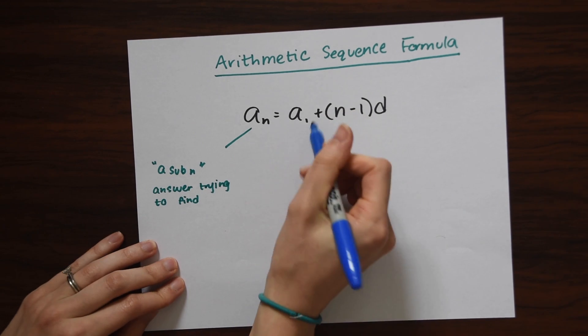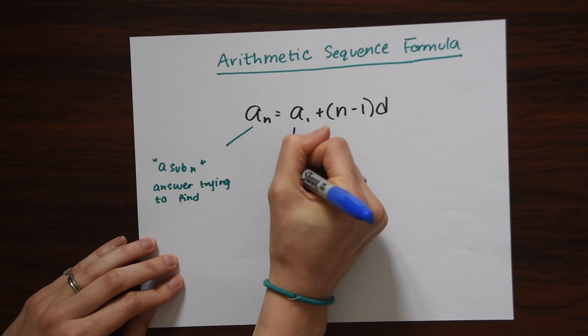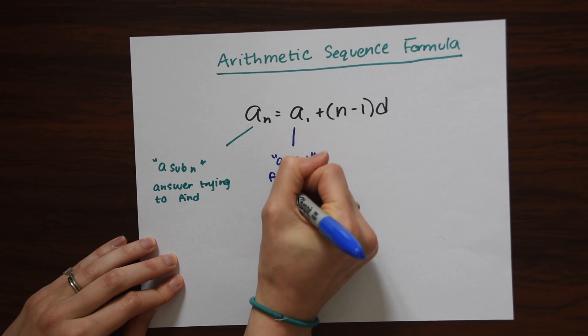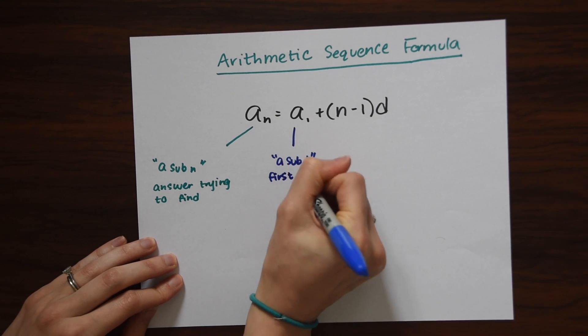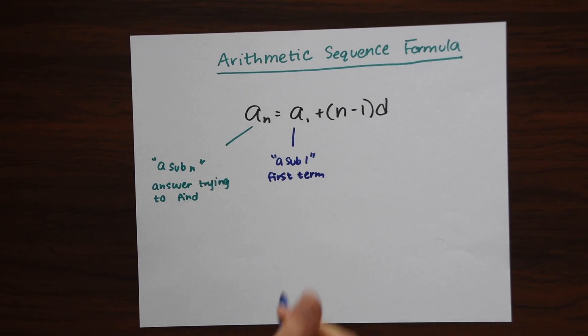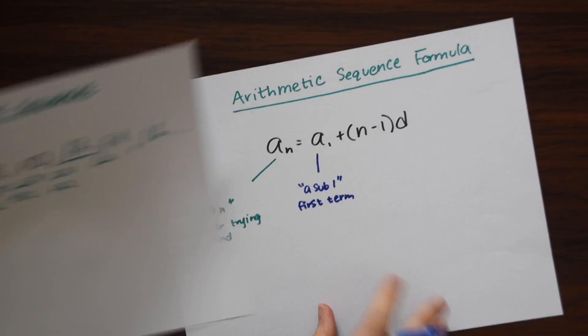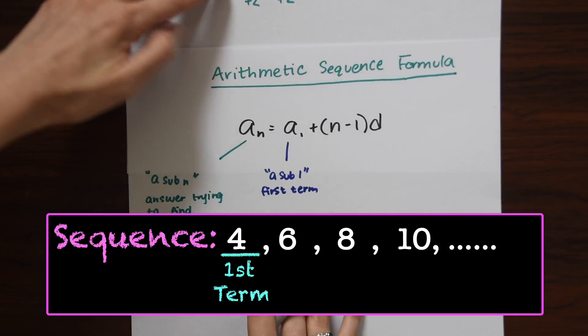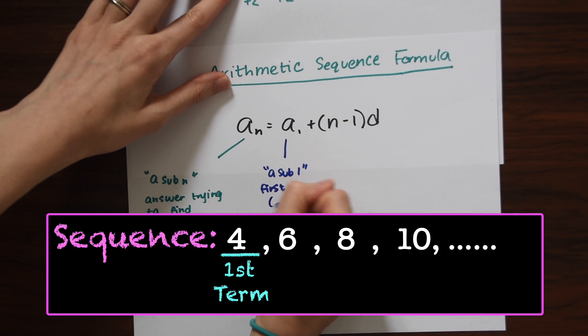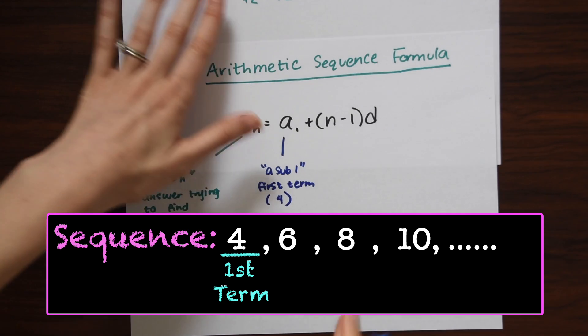So our next term here, A sub 1, just means the first term in our sequence. So in the example we just looked at, the first term here is just 4. So just going with that same example.